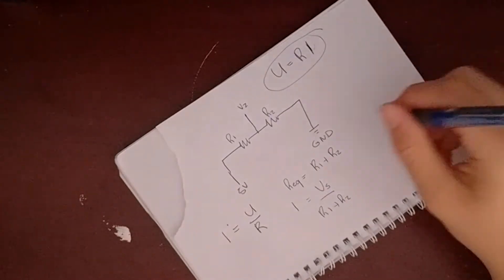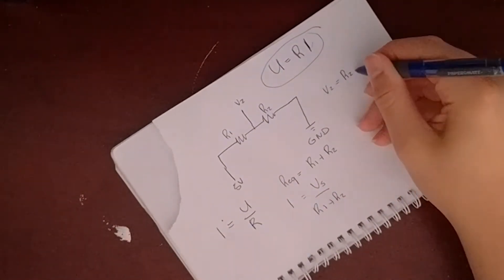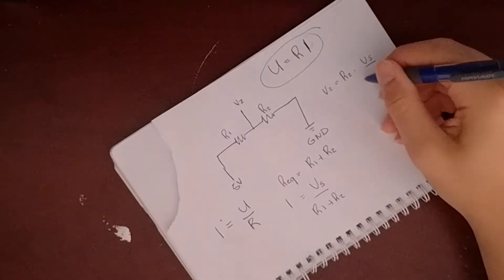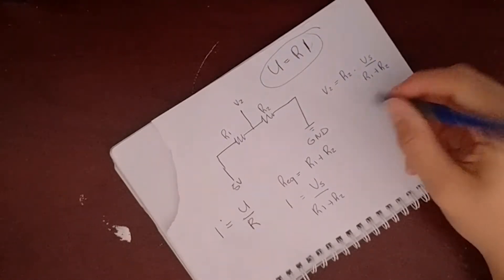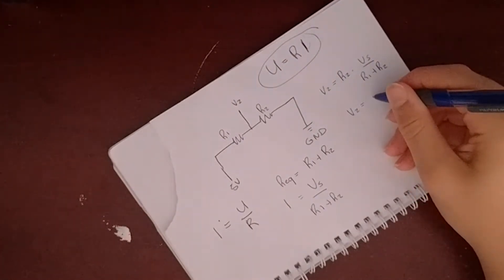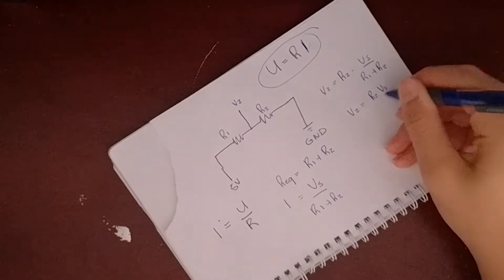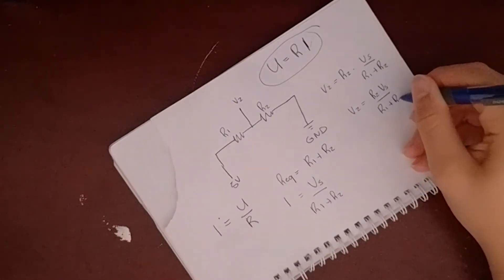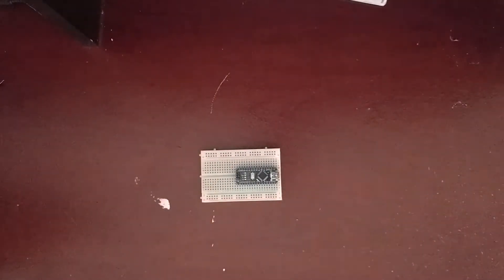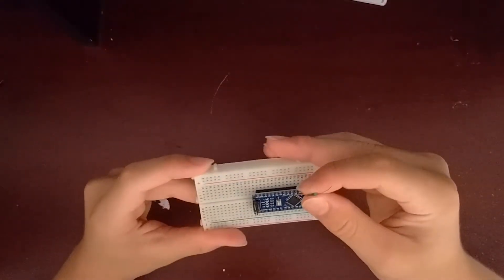We can now get the formula for V2, which is R2 times voltage to the source divided by R1 plus R2. Now let's wire our circuit. First, connect the resistor from the plus 5 volt from the Arduino to an open rail on the breadboard.